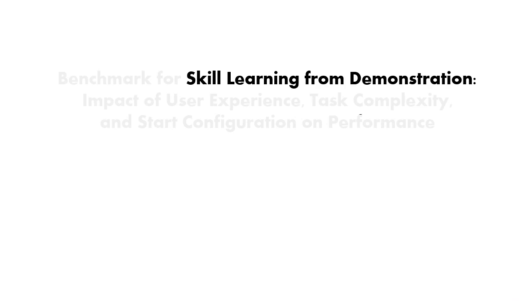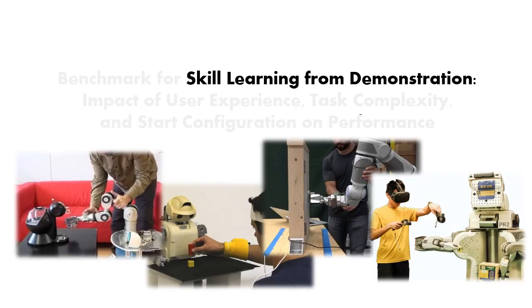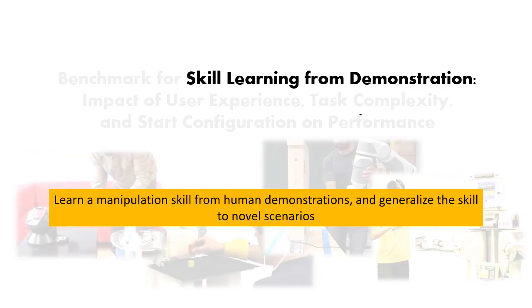When I talk about skill learning from demonstration, I'm specifically talking about learning manipulation skills from human demonstrations. This is also called trajectory learning or even behavior cloning. The goal is to learn a manipulation skill from multiple human demonstrations — which are trajectories or motions provided on the robot — and then generalize the skill to novel scenarios.